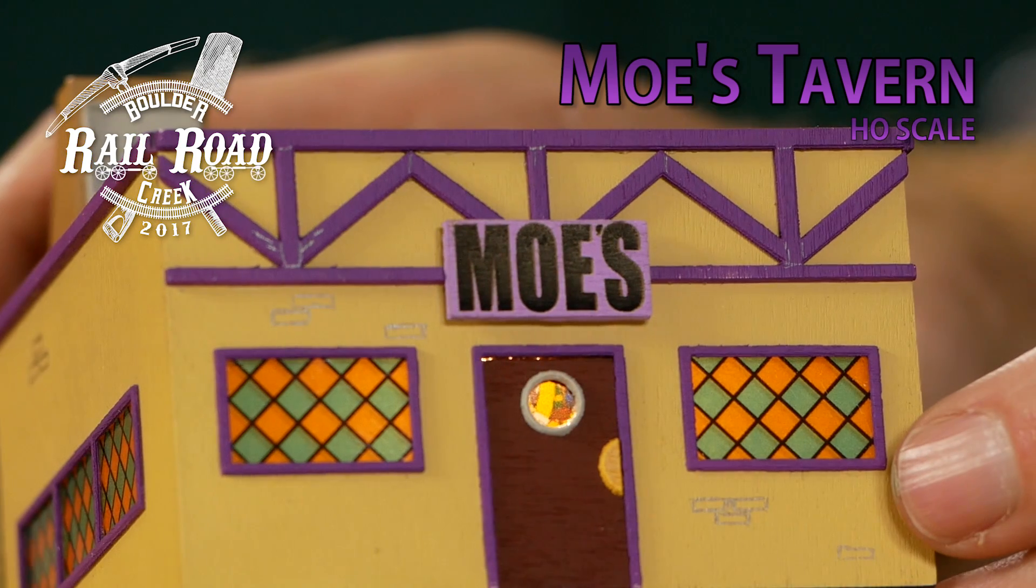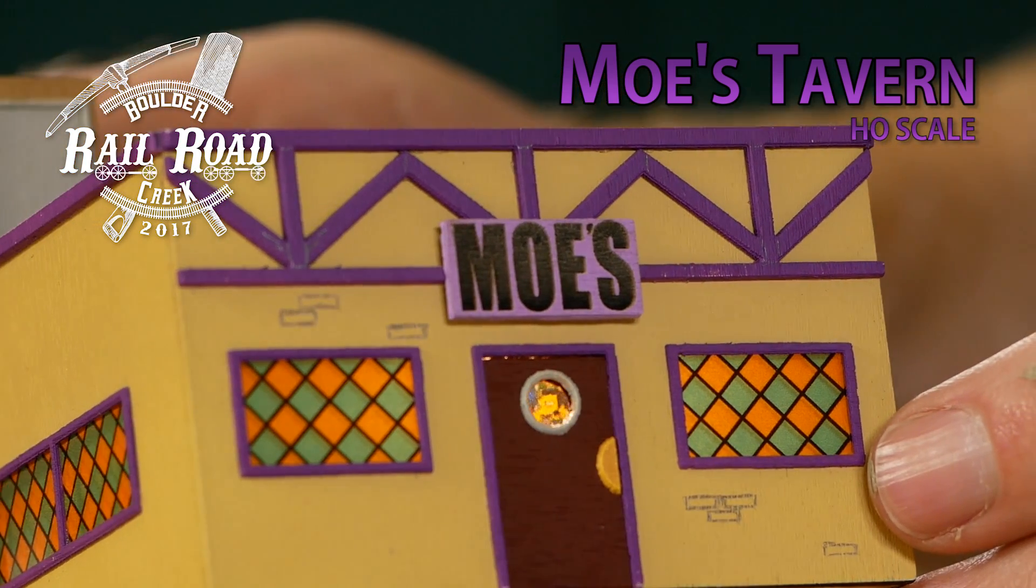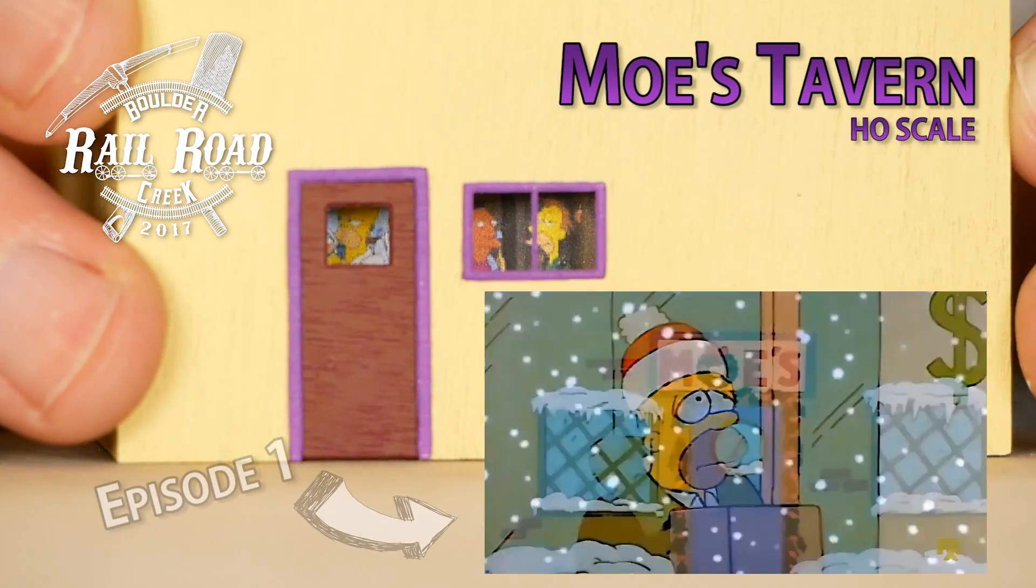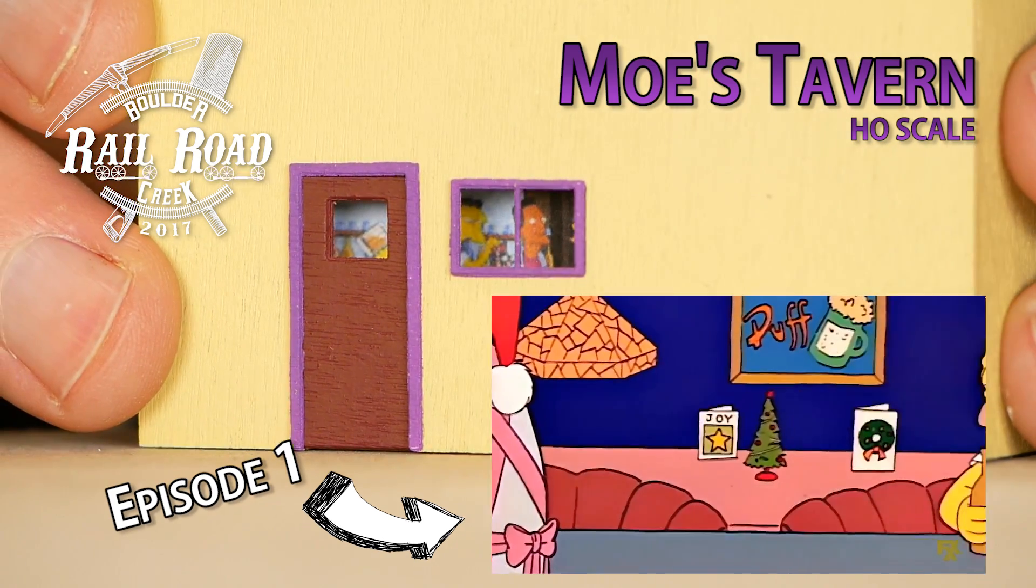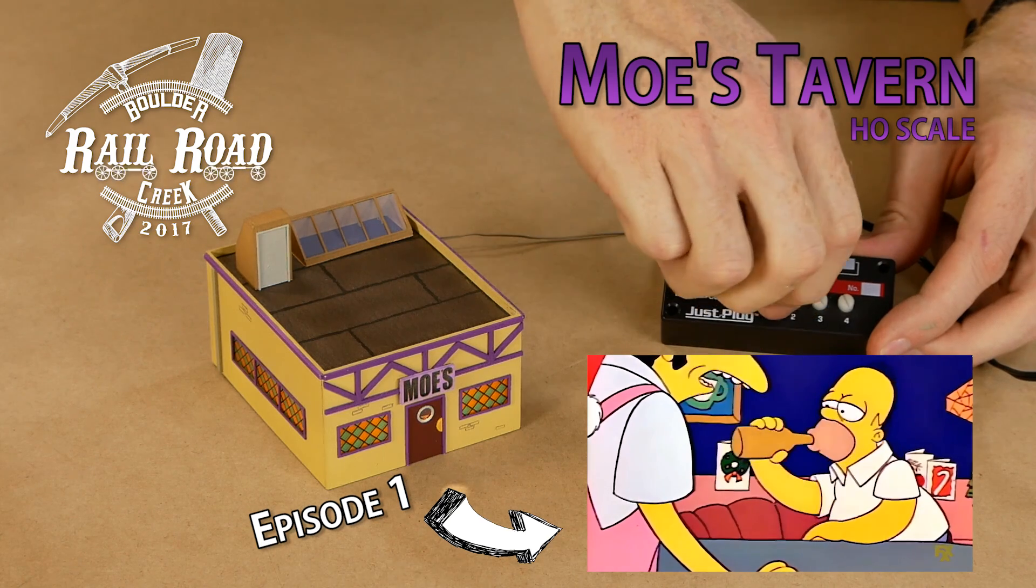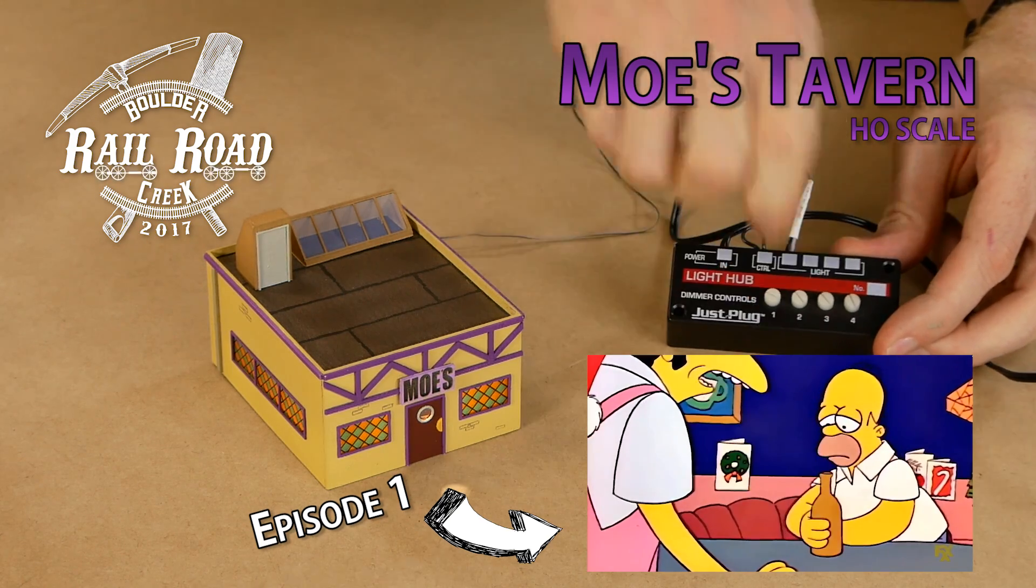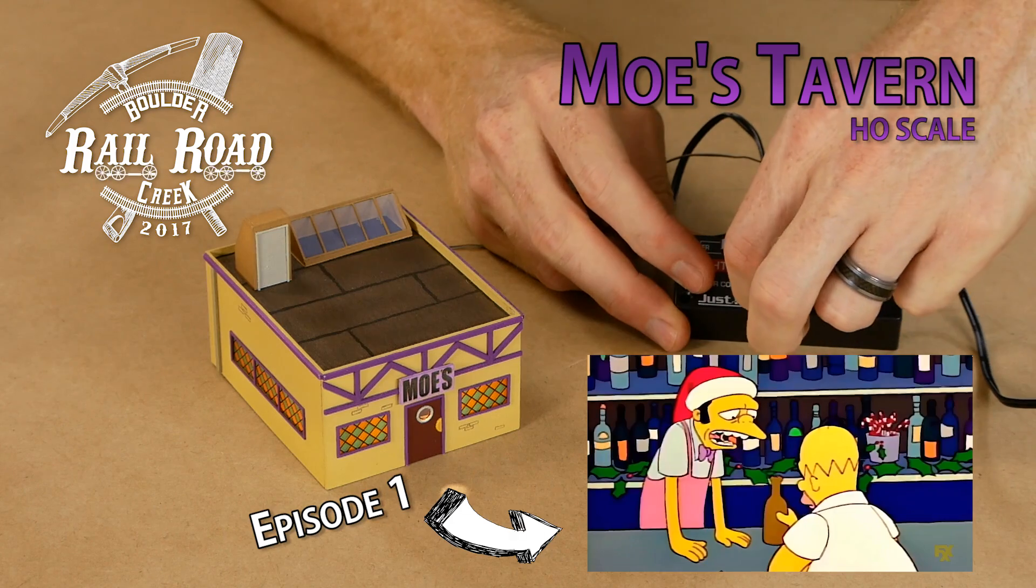Hey all, and welcome to this fun tutorial. Today, I'll be designing and constructing this cool little building from The Simpsons. Moe's Tavern was first seen in Season 1, Episode 1, and it's safe to say that it is one of the most iconic places in The Simpsons world. Let's not waste any more time and get started with the tutorial.